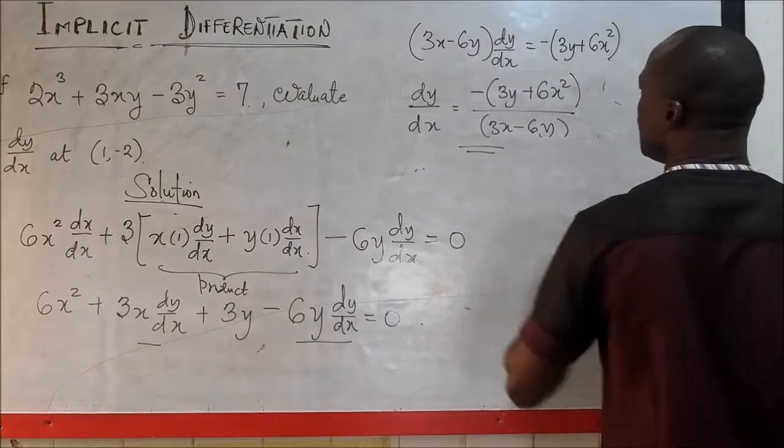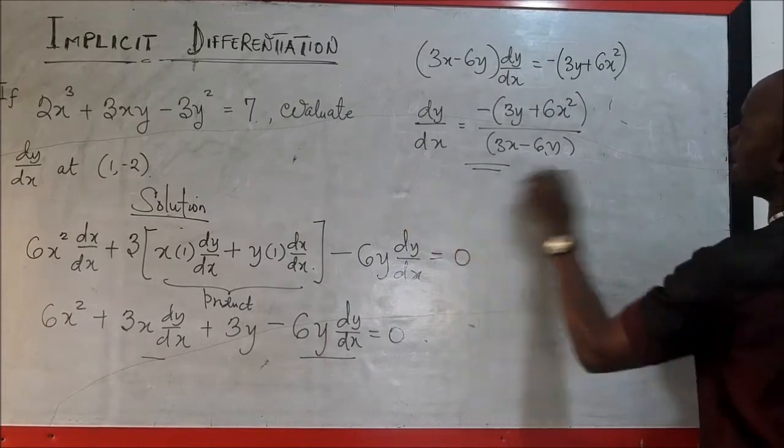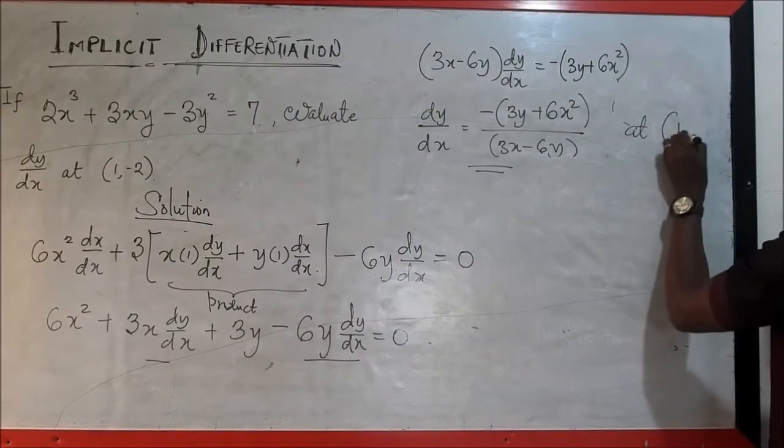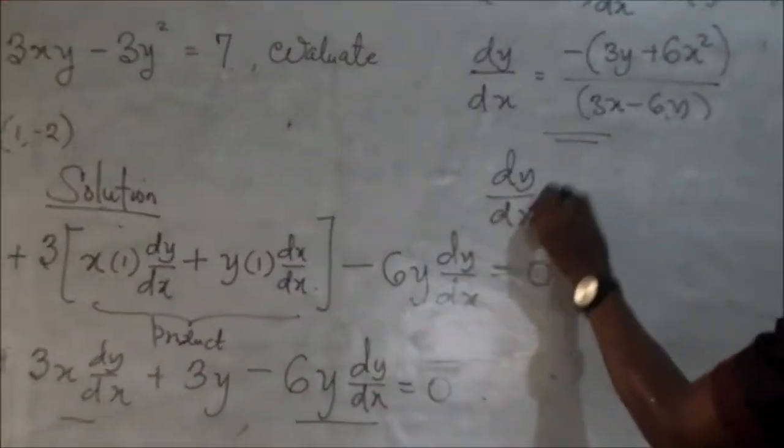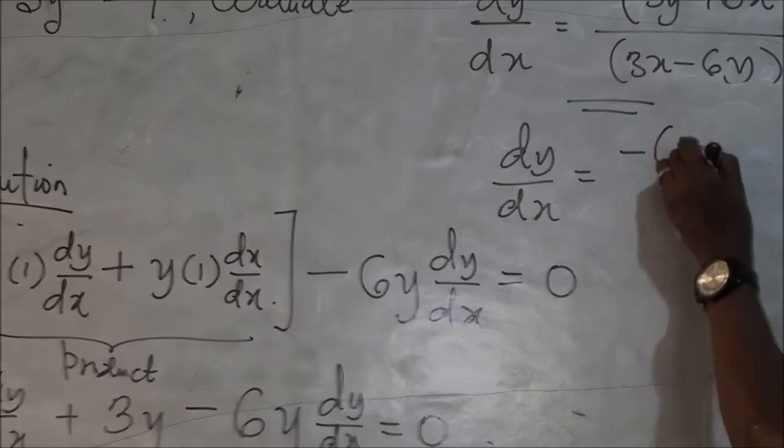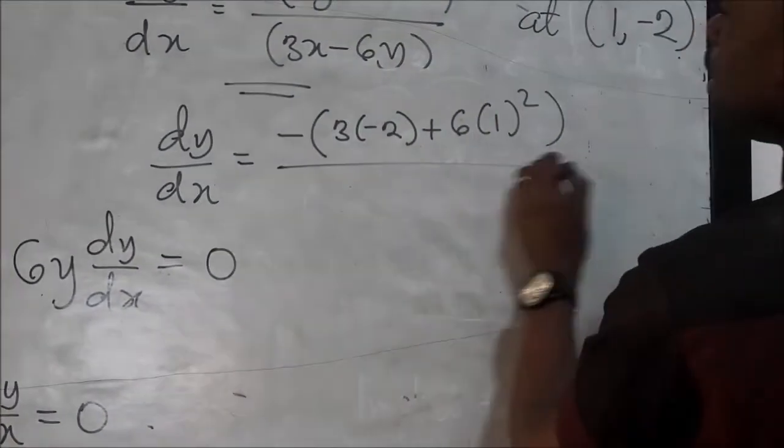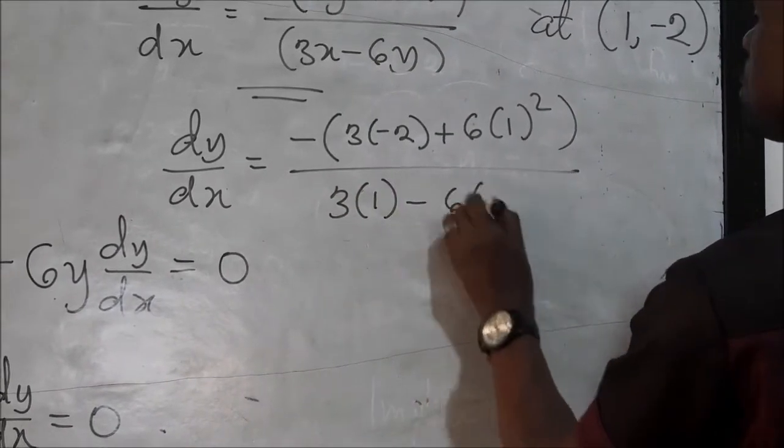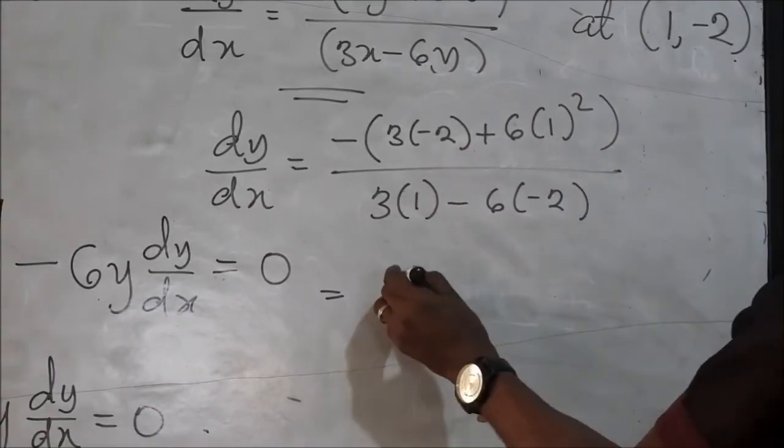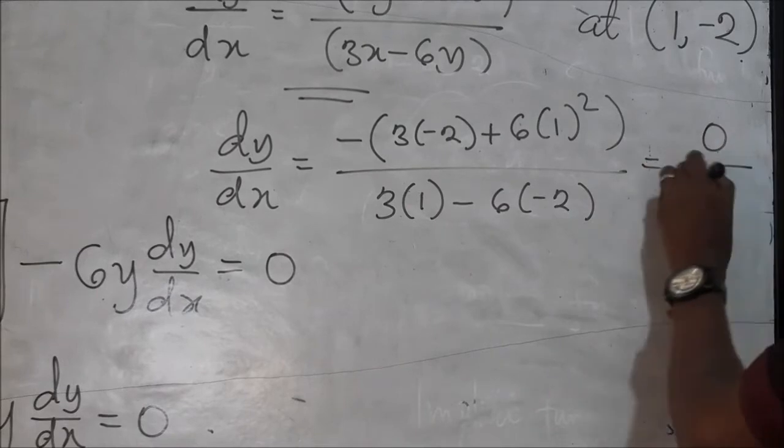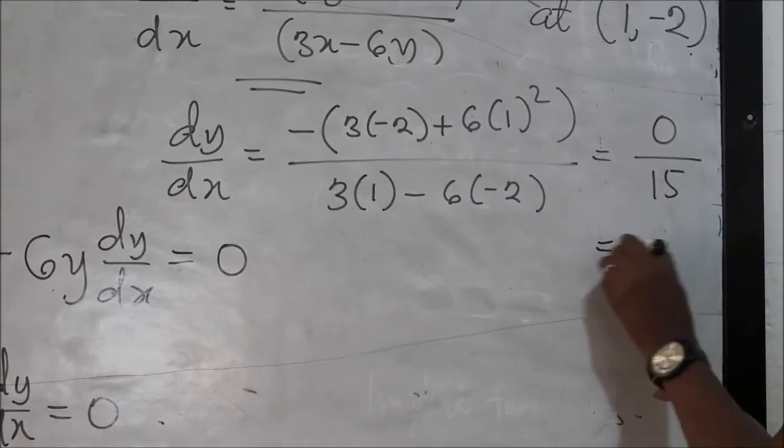All we now need to do is to substitute 1 and minus 2. So we are finding the slope at the point 1 and minus 2 precisely. dy dx will be equal to minus into 3 into minus 2 plus 6 into 1 squared divided by 3 into 1 minus 6 into minus 2. And that will give us 6 minus 6 and that is 0, divided by 3 plus 12 and that is 15.